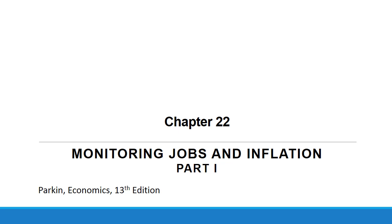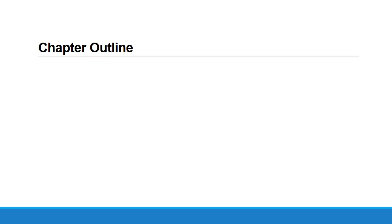Now in this chapter, we are turning to two other important indicators. Our chapter is divided into two main parts. In part number one, we are going to talk about unemployment. In part number two, we are going to focus on inflation and how to measure inflation. So let's start with the chapter outline.